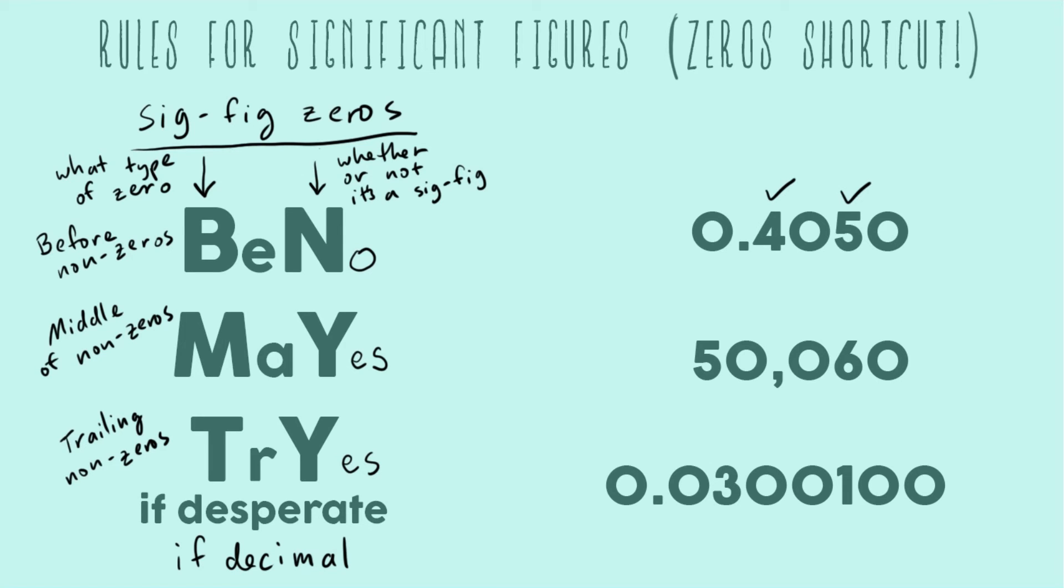And now let's start at the left and go over whether or not it's a sig fig. So this one happens before all of your numbers. So this is not a sig fig. And now we have this one that's in between four and five. So that counts as a middle zero. So yes that is a sig fig.